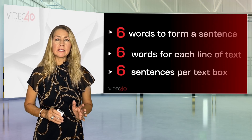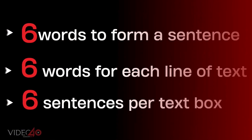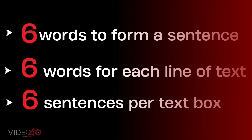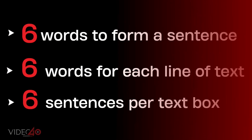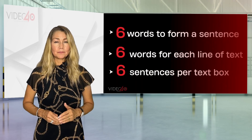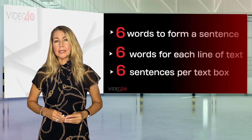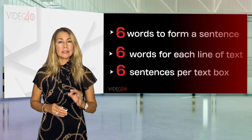The 666 rule will help you simplify and be more effective when designing a PowerPoint presentation. First, 6 words to form a sentence — use only 6 words for each line of text. Second, 6 sentences per text box — write 6 lines of text per paragraph. And third, 6 continued text slides — when writing the content, distribute the text across 6 correlative slides.